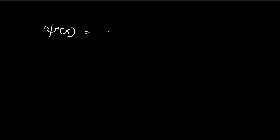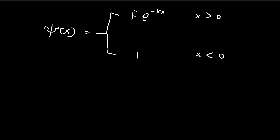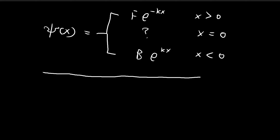To summarize what we have so far: ψ(x) = F·e^(−kx) for x > 0, and ψ(x) = B·e^(kx) for x < 0. When x = 0, we don't yet know what the solution should be. We'll use boundary conditions in the next step to complete our answer. That's a brief summary of what we've achieved so far.